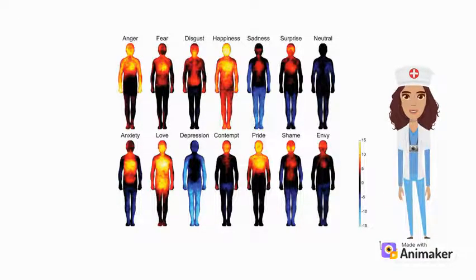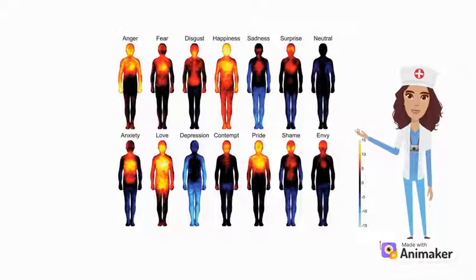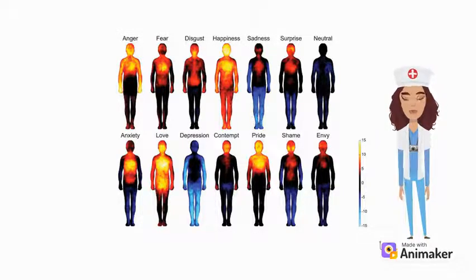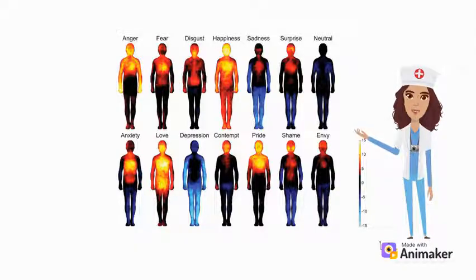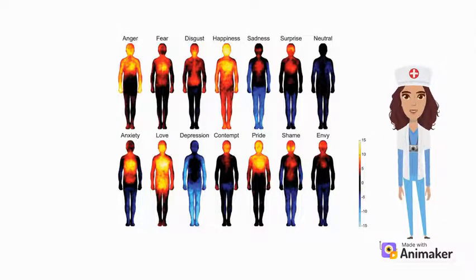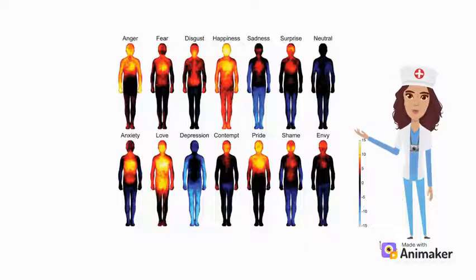Now we'll look at some specific conditions associated with the parietal lobe. One is parietal lobe syndrome. Parietal lobe syndrome may occur after sustaining damage in one of the parietal lobes. This tends to cause a few different contralateral symptoms, meaning the symptoms appear on the opposite side of the lobe that experienced damage.